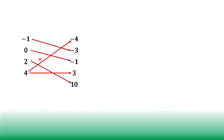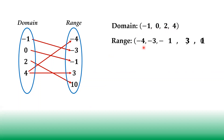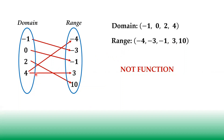Another mapping diagram. This is our domain, this is our range. Negative one maps to negative three, zero maps to negative one, two maps to positive ten, and four maps to both negative four and positive three. So the domain is negative one, zero, two, and four. Range is negative four, negative three, negative one, three, and ten. So this one is not a function, since three and negative four have the same first coordinate, which is four.